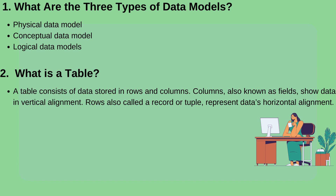Question 2: What is a table? A table consists of data stored in rows and columns. Columns, also known as fields, show data in vertical alignment. Rows, also called a record or tuple, represent data's horizontal alignment.